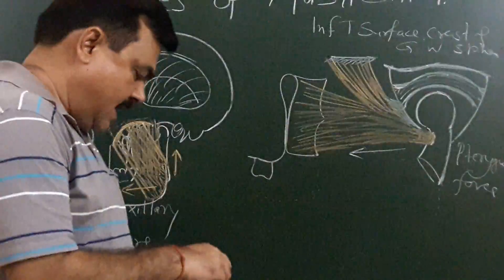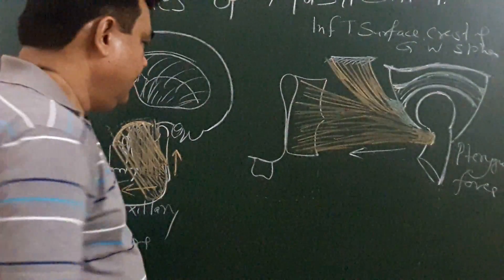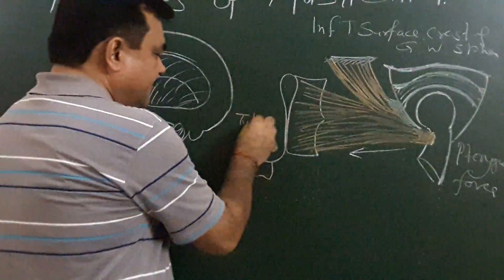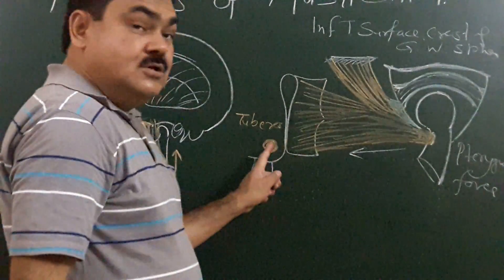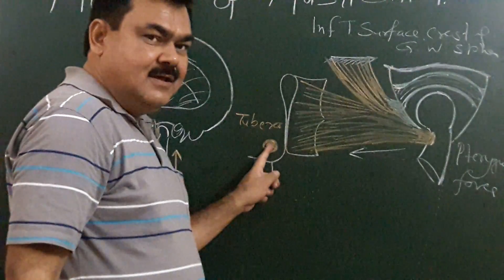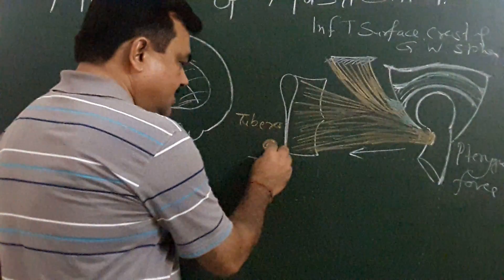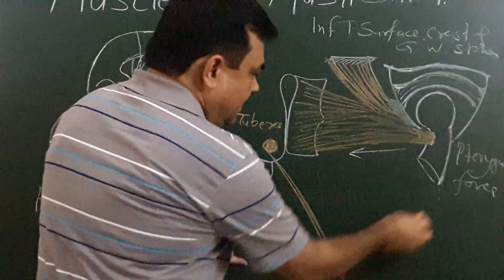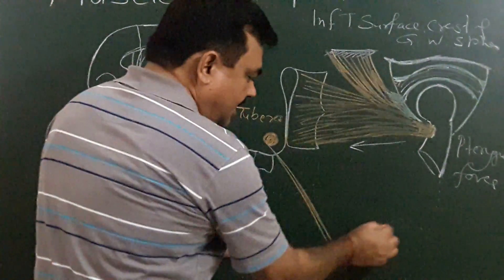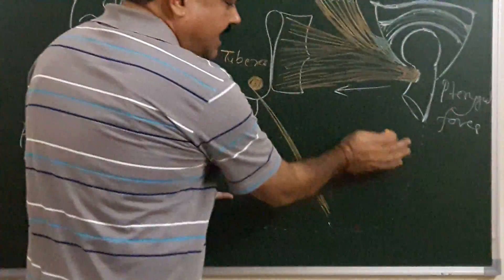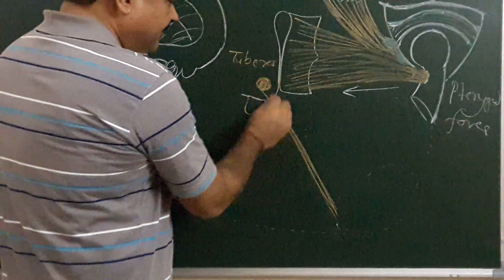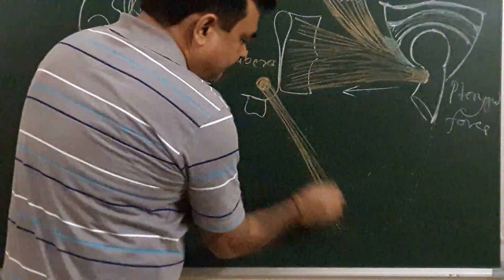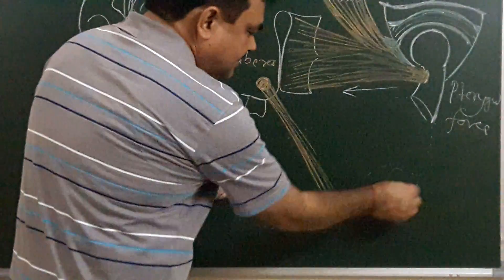The medial pterygoid muscle has two heads. Here is the maxilla — there is the tuberosity of the maxilla. The superficial head takes origin from the tuberosity of the maxilla and is inserted on the rough area present on the medial surface of the angle of the mandible.